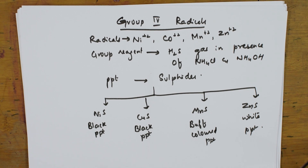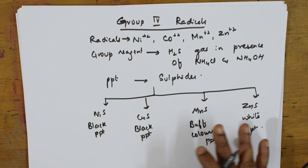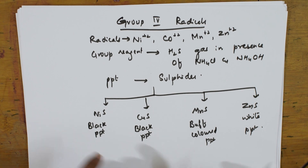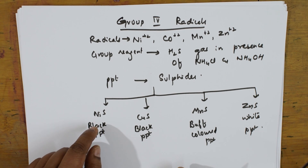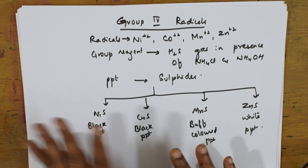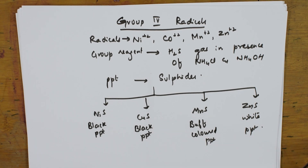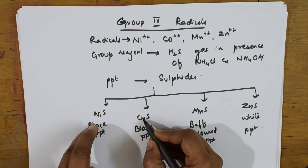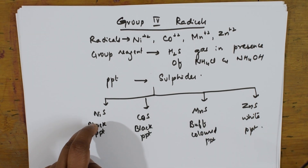Now let us see how these precipitates are formed and how we proceed further. We will take nickel and cobalt — note this is cobalt sulphide, not copper sulphide — and test for these two first. We will do the confirmatory test since we have obtained the precipitate.